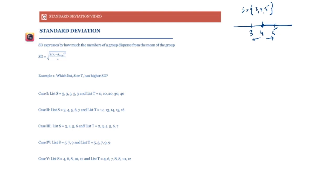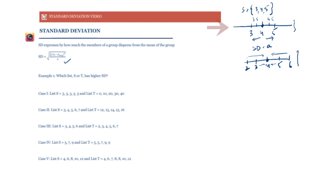There is a certain SD that we calculate using a formula, which we'll look at shortly. Let's say the SD for the set {3, 4, 5} is some value a. Now if we have a different set where elements like 2 and 6 are much farther away from the mean, while we still have 3 and 5, those elements are not as closely packed. So the SD of the more spread-out set will be higher.